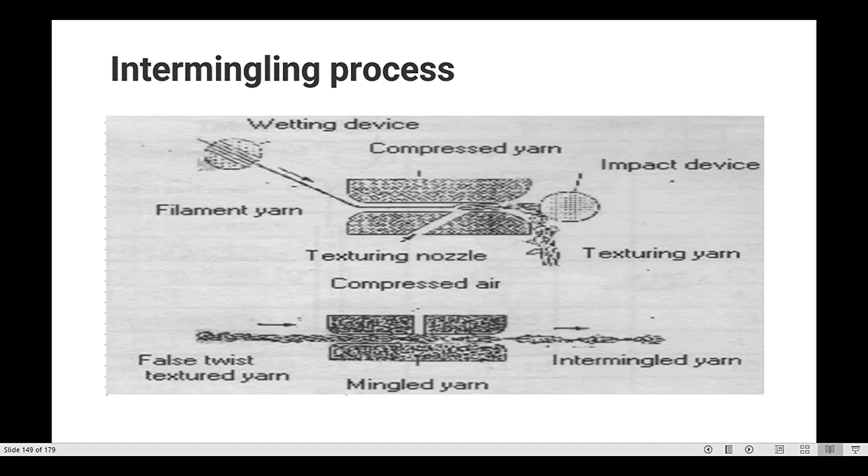Here is a diagram: yarn and compact section, compact device, and textured yarn. After the intermingling process is a flat yarn. Here is one commingled section and here is intermingled yarn. You can see the difference here.